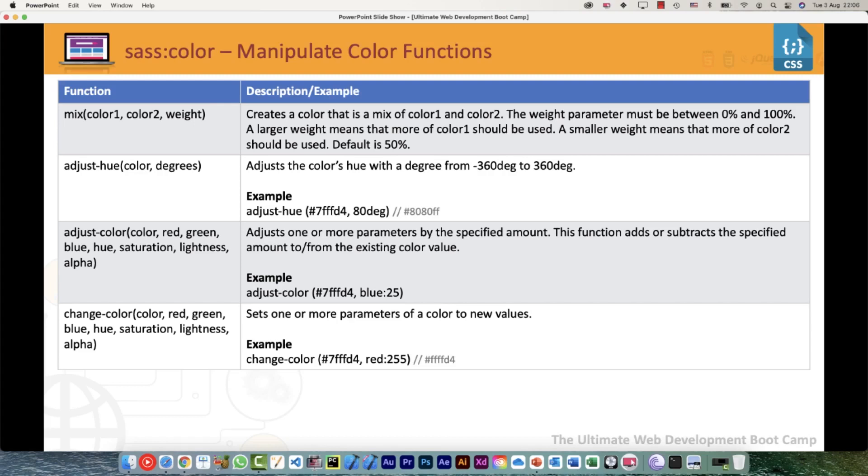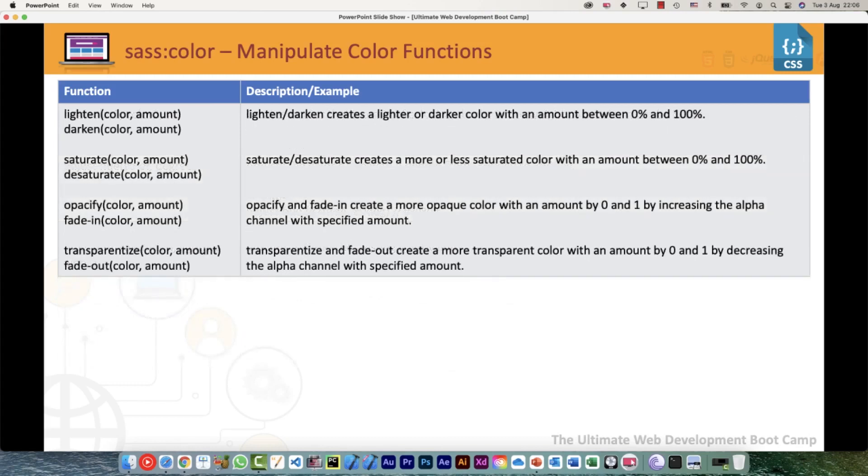In the adjust-color function, it would actually add or subtract the specified amount from the existing color value. So if the existing color value is 200 and we are adjusting it by 25, that means the new value would be 225. The change-color would, whatever the value for the parameter we pass, that would be set without any addition or subtraction. That new value would be set to that particular value.